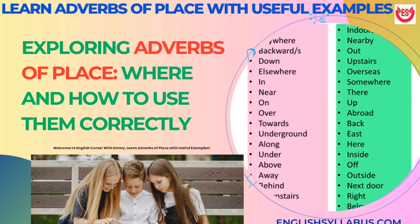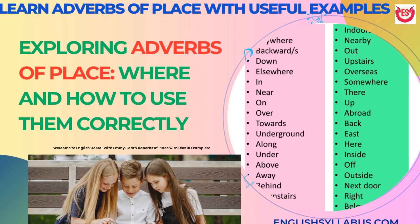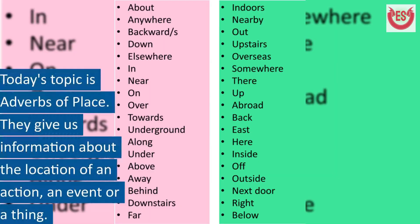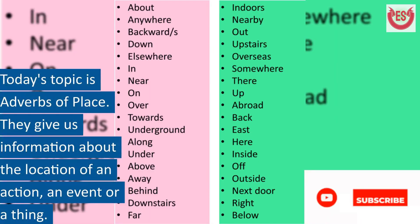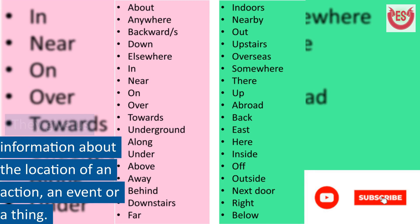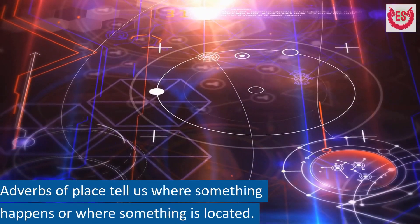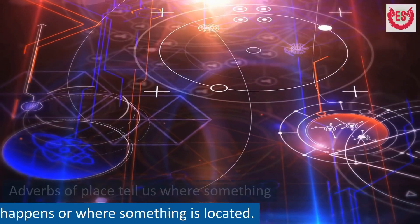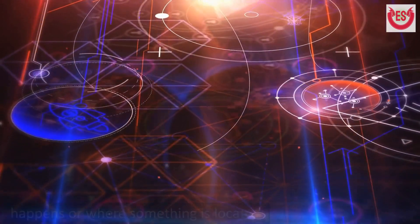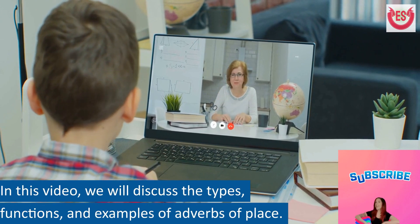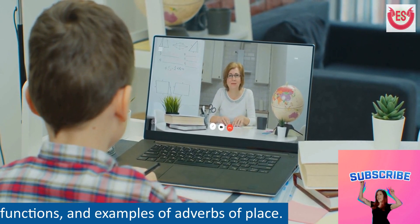Welcome to English Course with Emi. Learn adverbs of place with useful examples. Hello everyone, welcome back to our English language lesson. Today's topic is adverbs of place. They give us information about the location of an action, an event, or a thing. Adverbs of place tell us where something happens or where something is located. In this video, we will discuss the types, functions, and examples of adverbs of place.